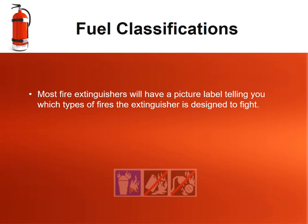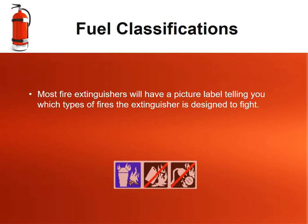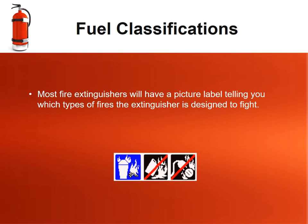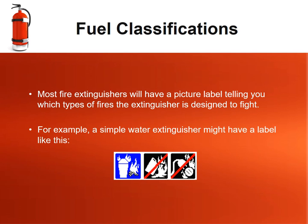Most fire extinguishers will have a picture label telling you which types of fires the extinguisher is designed to fight. For example, a simple water extinguisher might have a label indicating it should only be used for class A fires, such as paper, weeds, or dry grass.